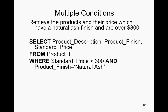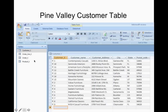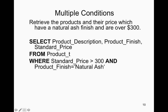We can have multiple conditions. To retrieve products with a natural ash finish and over $300, in the SELECT we put product description, product finish, and standard price. We're getting this from the product table. In the WHERE clause, if you have multiple conditions, there needs to be an AND. So: WHERE standard price is greater than $300 AND product finish equals 'natural ash'. Make sure you put the equals sign and then the value in quotes, or it's not going to find the natural ash products over $300.